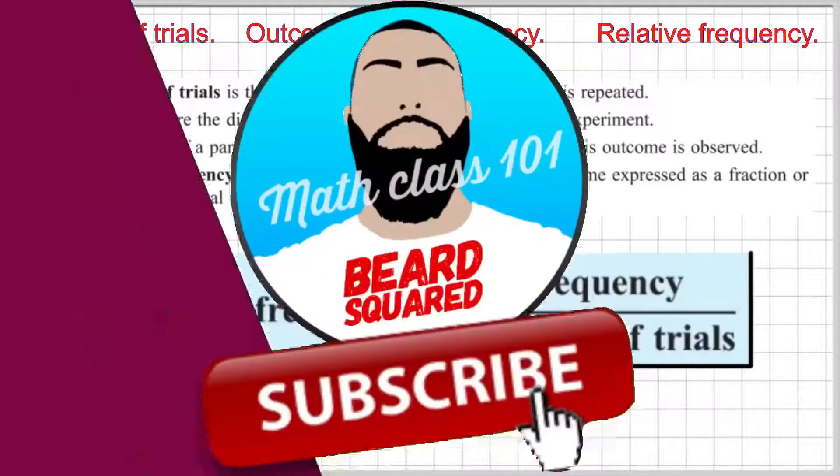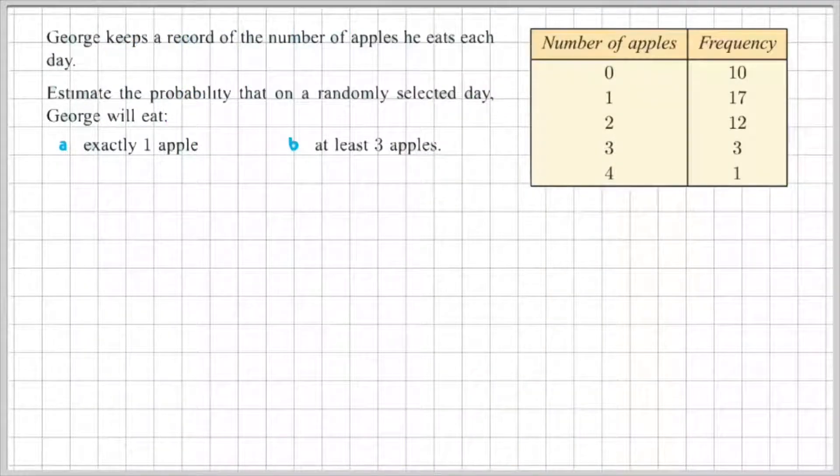Okay, so let's do an example using relative frequency. George keeps a record of the number of apples he eats each day. Estimate the probability on a randomly selected day that George will eat exactly one apple and be at least three apples. So, we're going to be using this table of values to answer the question.